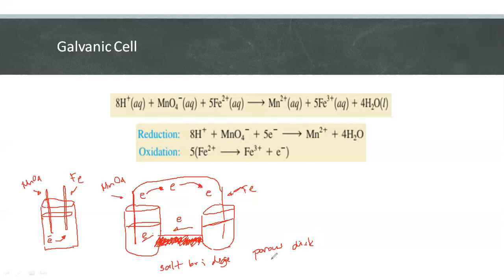When we make provision for ions to flow, the circuit is complete. Electrons flow through the wire from reducing agent to oxidizing agent, and ions flow from one compartment to the other to keep the net charge zero.